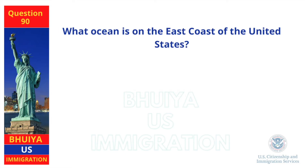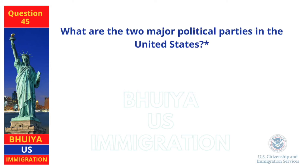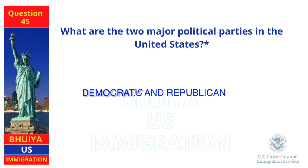What ocean is on the east coast of the United States? Atlantic Ocean. What are the two major political parties in the United States? Democratic and Republican.